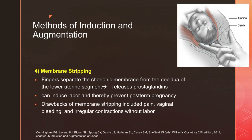The last method for induction and augmentation is membrane stripping. This involves using fingers to separate the chorionic membrane from the decidua of the lower uterine segment. This separation releases prostaglandins, which can cause uterine contractions, induce labor, and thereby prevent post-term pregnancy. The drawbacks include pain, vaginal bleeding, and irregular contractions without labor.